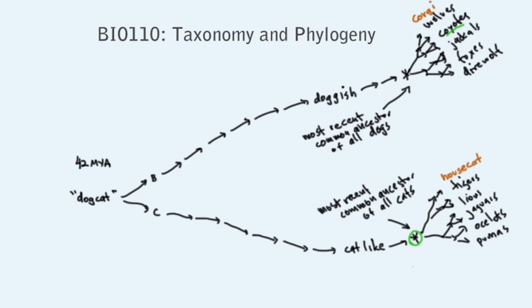So generalizing here, the evolutionary relationship between two species is closer or more distant, depending entirely on the recency of their common ancestry. The more ancient the common ancestor, the greater the distance between the species.